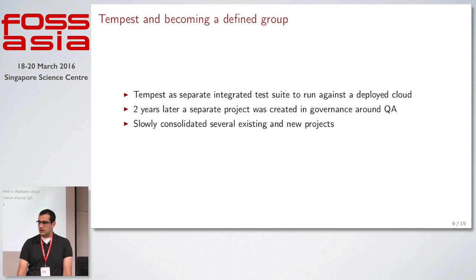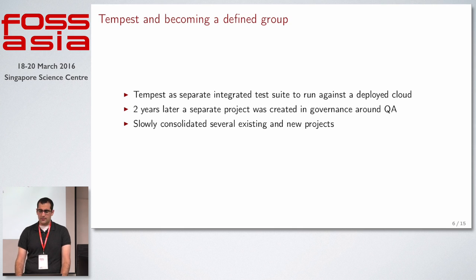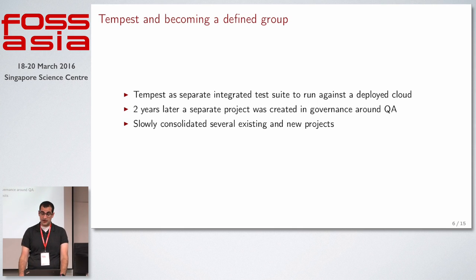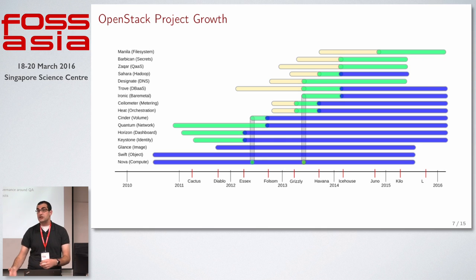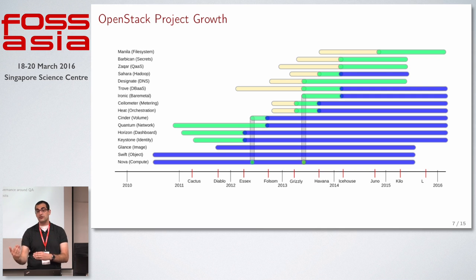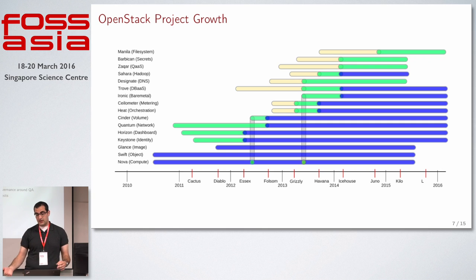In the second half of 2011, around December, a project called Tempest — actually called Kong back then — was started. It was an integrated test suite that would take all the components of OpenStack, assume they were running, and just make API requests to test them. Two years later that project continued to gain traction, was renamed from Kong to Tempest, and started being used for CI gating — pre-merge gating. When you pushed a patch, Tempest was run and the patch couldn't land unless Tempest successfully passed. Two years after that, the community decided to create a QA governance group to own all of these projects.